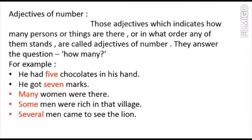'Many women were there.' Many refers to a certain number of women, so many is the adjective of number. 'Some men were rich in that village.' Some also refers to the number of men, so some is the adjective of number. 'Several men came to see the lion.' This also refers to a certain number of men, so several is also the adjective of number. In all these examples, the words refer to the number of persons or things — that is why they indicate adjective of number.